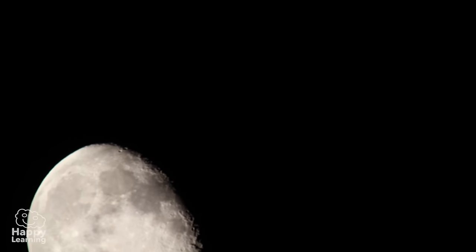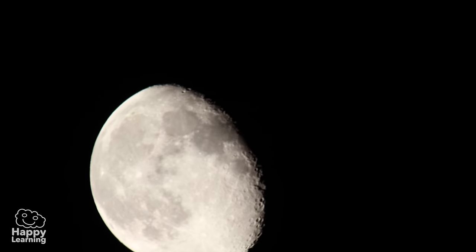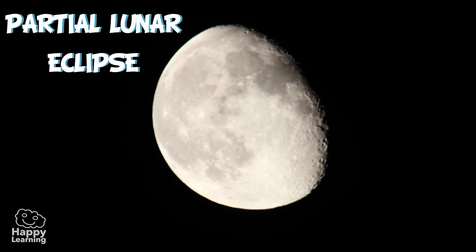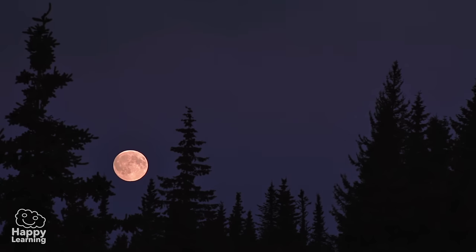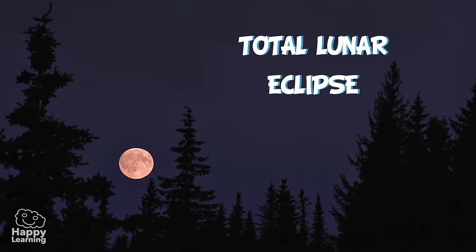When there is an eclipse and it looks as if someone has taken a bite out of the Moon, it is a partial lunar eclipse. And when there is an eclipse and one can see the whole Moon, it is a total eclipse.